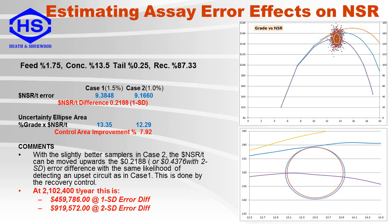With an increase in the one standard deviation difference to the set point and 2.1 million tons per year of production, the better precision samplers will result in a net smelter return improvement of $460,000 per year.